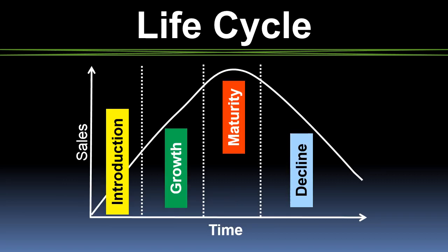The life cycle curve has four cycles. First, there is an introduction phase where there is little to no competition. Unit prices are high and profitability is typically excellent. The second phase is a period of sales growth. Prices are still high and profitability is good, but good profitability starts to attract rivals.